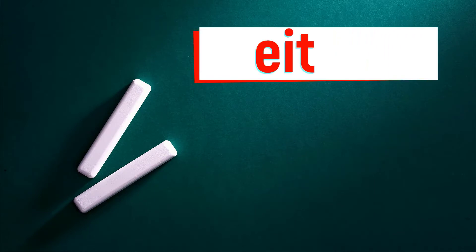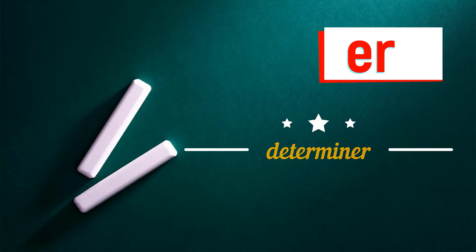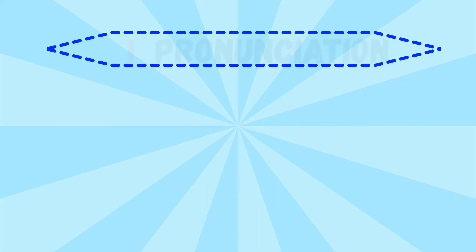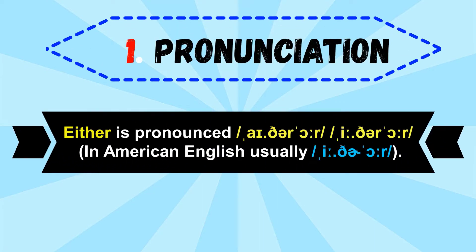Either. Determiner. Pronunciation: 'either' is pronounced either or either. In American English, usually 'either'.